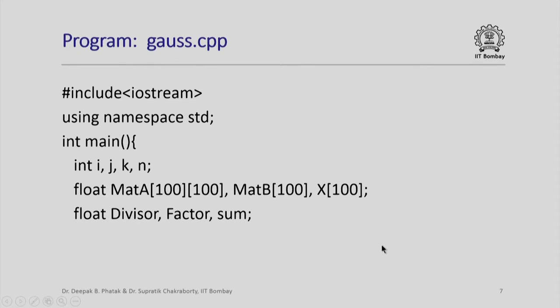We now look at the program gauss.cpp and let us see how we construct such a program. First of course, the standard inclusion of IO stream and the declarations of variables. I, j, k will be used as index variables as is the common practice, n represents the number of unknown variables or represents the system of equations as being of n linear equations. Matrix A represent the coefficient matrix, we have declared it to be 100 by 100.